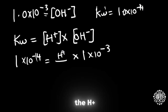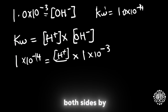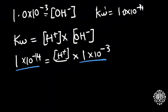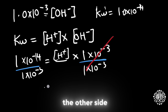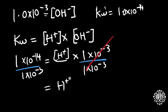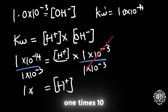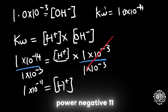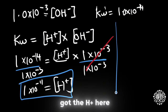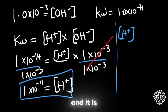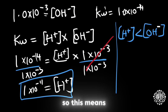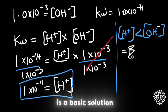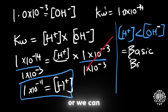To get the H⁺ ion, we divide both sides by 1 times 10 to the power negative 3. This gives us the H⁺ ion as 1 times 10 to the power negative 11. We can see that the H⁺ ion is less than the OH⁻ ion, so this means that this is a basic solution — or we can say that this is a base.